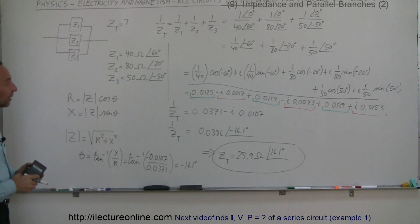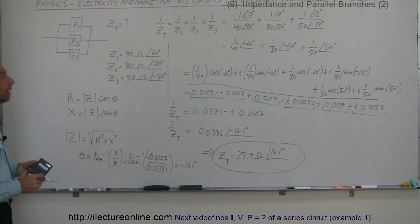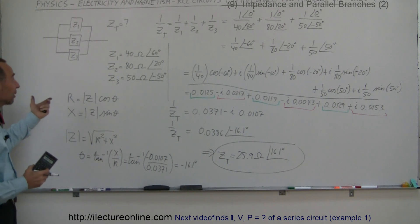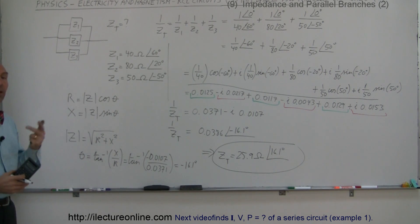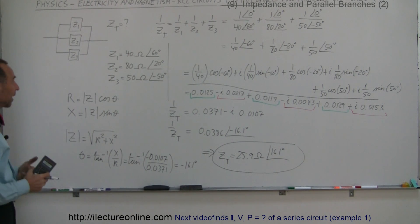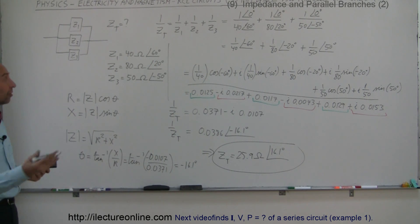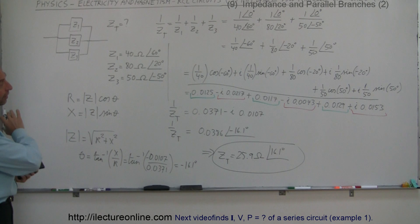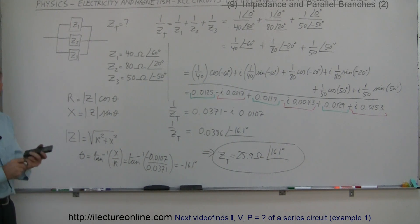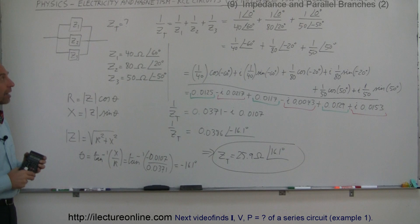Hopefully that made it clear, and now you're ready to start tackling these different kinds of circuits where we have parallel branches and impedances with both inductors, capacitors, and resistors — where we have reactance and resistance combined together. We'll do some examples to fortify your understanding of how to do that.